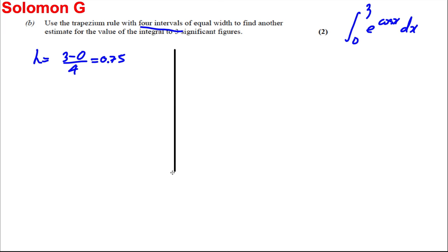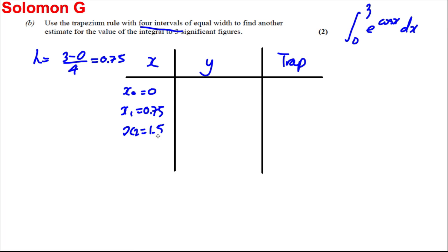My new table. My X, my Y, my trapezium. X₀ is again going to be 0, but X₁ is going to be 0.75. X₂ is going to be 1.5, X₃ is going to be 2.25, and X₄ is going to be equal to 3 as before.